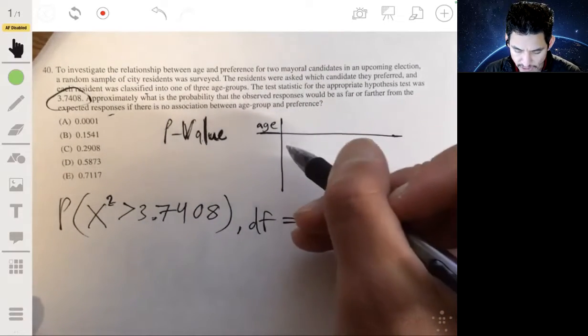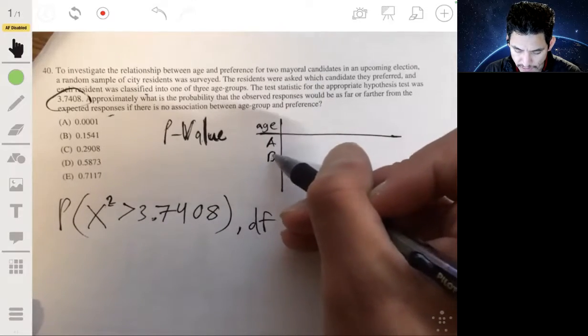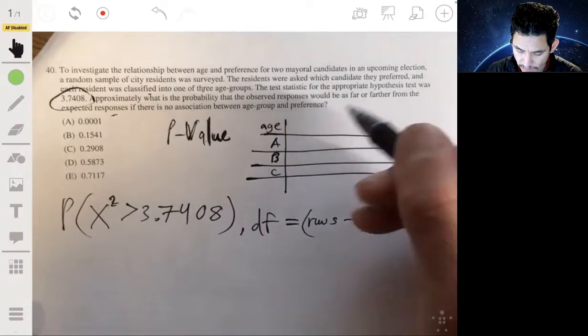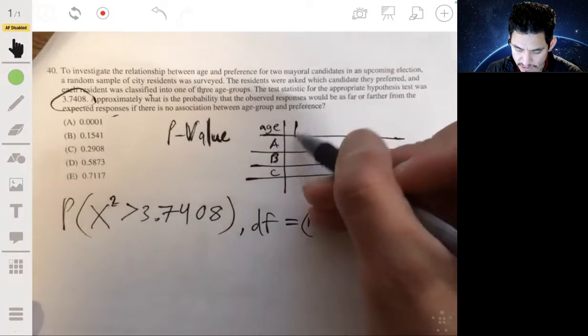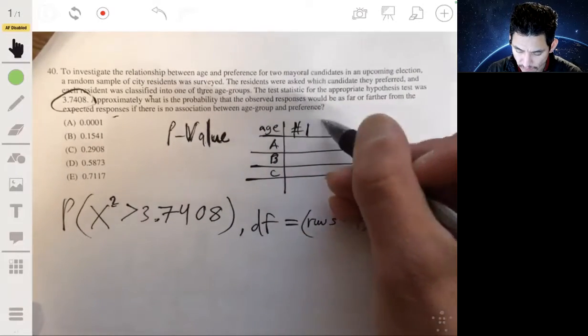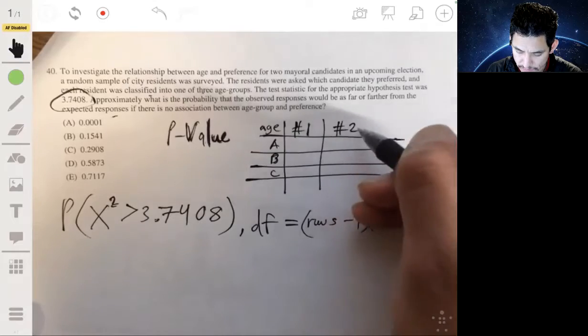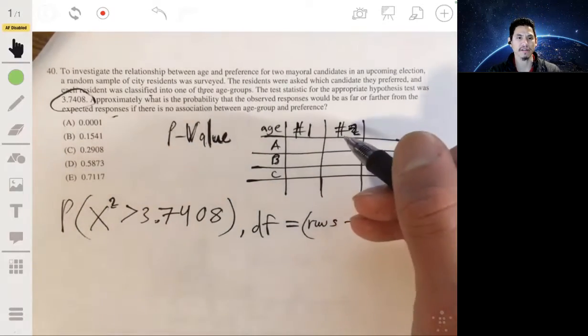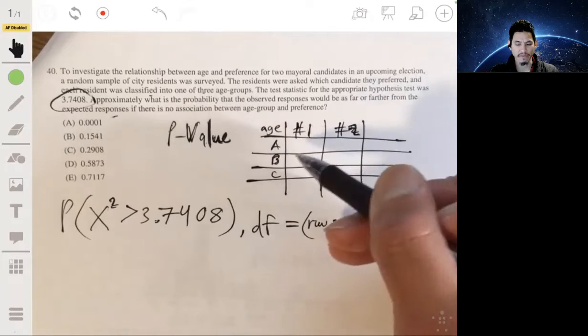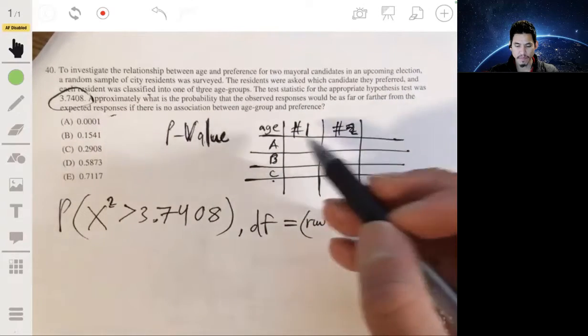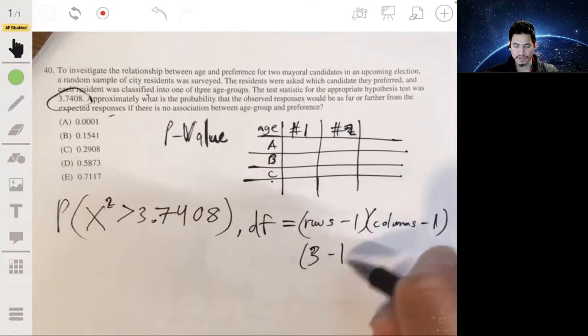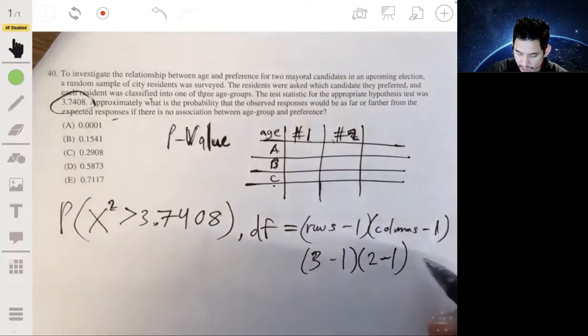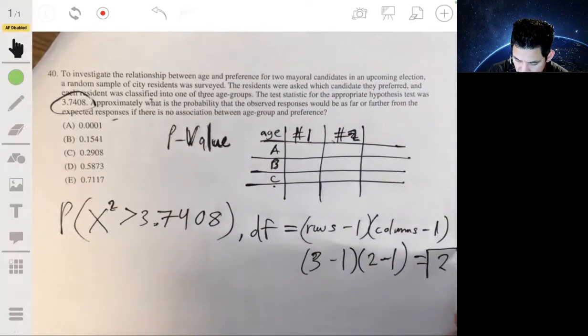So, we're talking about three age groups. Ages are broken down into three age groups. Let's just call them age group A, B, and C across the rows. And we're looking at two candidates. So, let's just have candidate one and candidate two. And in here, you would have your data value, your observed count. So, you see you have one, two, three rows. So, three minus one times two columns, times two minus one. So, we would have just two times one. So our degrees of freedom would be two.